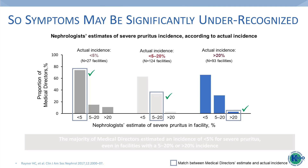Looking at these bar graphs: the actual incidence of itch is high in the majority of facilities, yet a nephrologist's estimate of that symptom in their units is much lower than patients report. In all of those facilities, a nephrologist's estimate of severe pruritus was less than 5%, while in the majority of facilities patients were reporting it at considerably higher rates. Among those patients nearly always bothered by itch, 17% similarly didn't report that symptom to anybody at all.